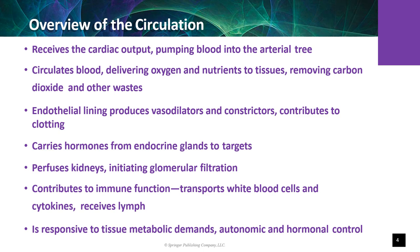The systemic circulation begins with the aorta, which receives output from the left ventricle and branches into numerous parallel vascular circuits. At rest, the kidneys, the GI system, and the skeletal muscle system each receive about 20% of the cardiac output, and skin blood flow is only 4 to 5%. The redistribution of blood flow is an adaptive mechanism that ensures blood is directed to areas with greater metabolic needs during times of increased activity.